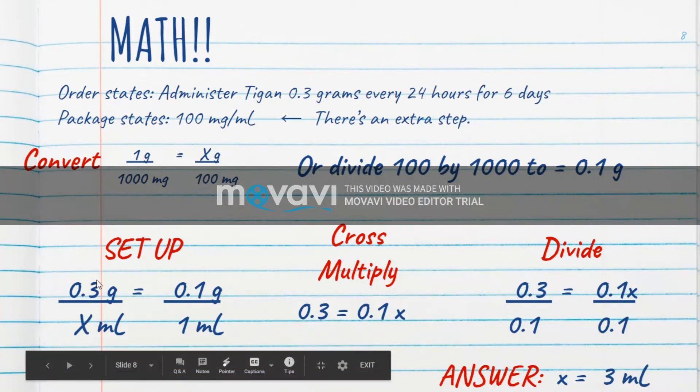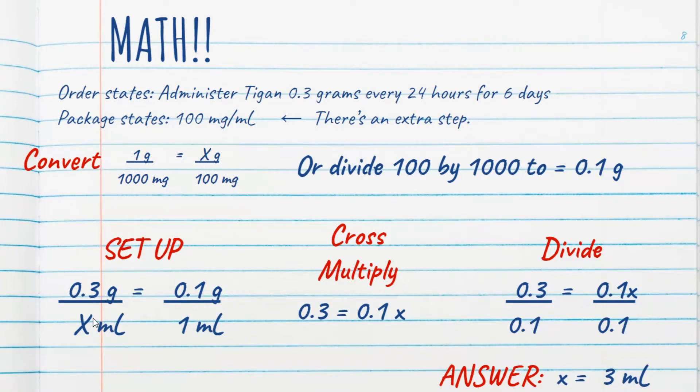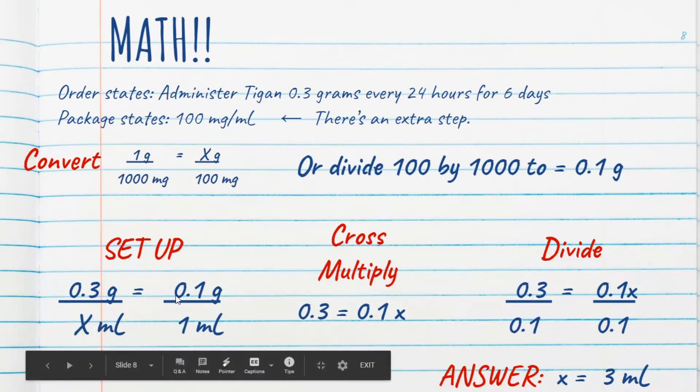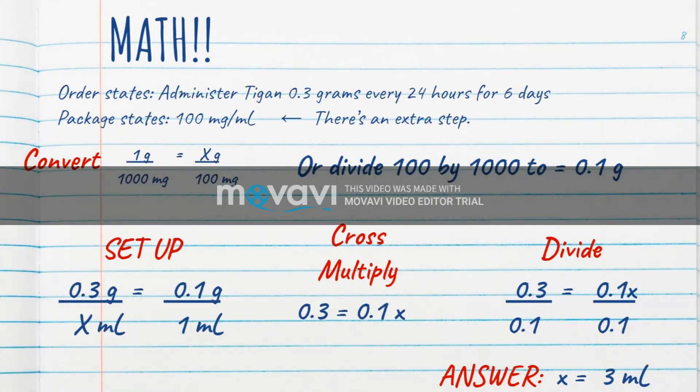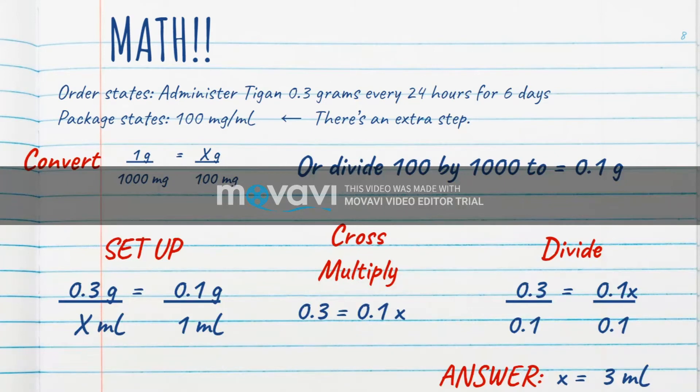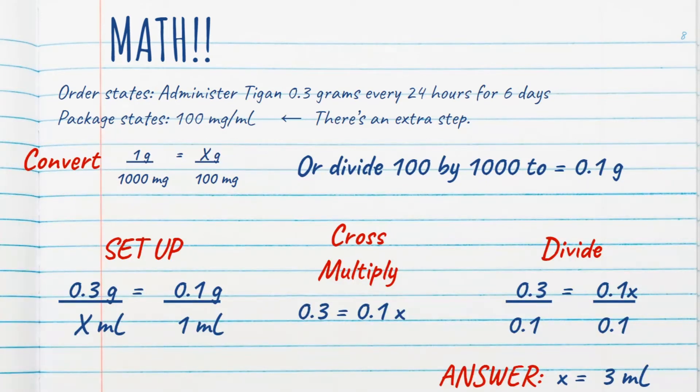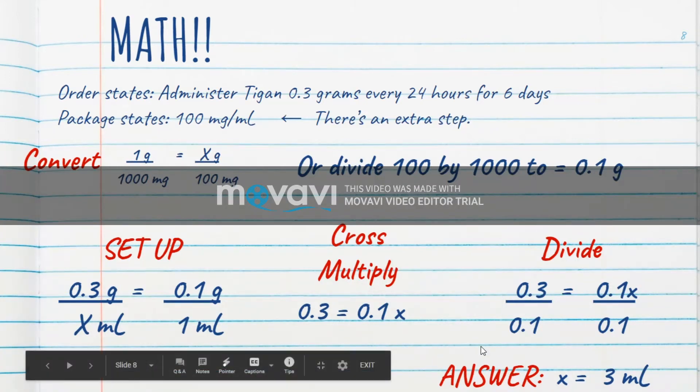So we're setting up the problem with our first answer inside of it. We're saying 0.3 grams over X mLs. We need to find what our order wants us to find. And then we have what the actual package said, what we have determined, 0.1 grams over 1 mL. Again, we cross multiply and divide. Cross multiplication gives us 0.3 equals 0.1 X. In order to get that X to stand alone, we have to divide both sides of the equation with 0.1. Our answer ends up being X equals 3 mLs.